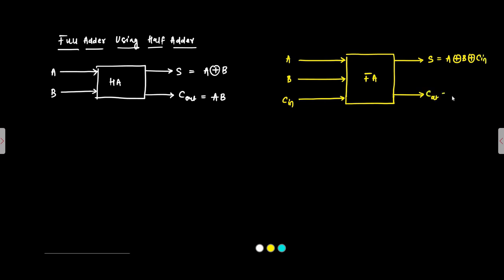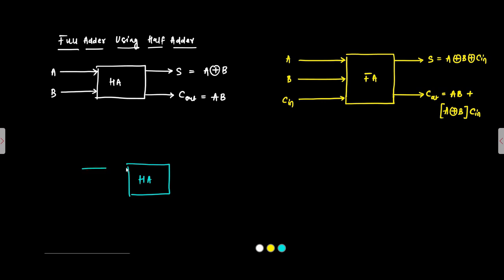The sum of the full adder is A XOR B XOR C-in, and the carry output is A·B OR (A XOR B)·C. So how can we use half adders to implement the full adder? First, we will use a half adder and give two inputs A and B. We will get A XOR B as the sum output and A·B as the carry output of the first half adder.